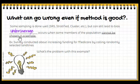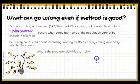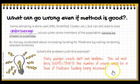For example: surveys conducted about increasing funding for Medicare by calling randomly selected landlines. Not everybody in the country has landlines these days — many younger people don't own them. So this will most likely overestimate the number of people who'd be in favor of Medicare funding being increased, because it's the older population who have landlines and who are more concerned about Medicare. It's not a true picture of the whole population.